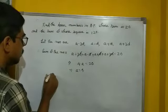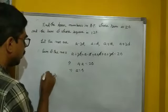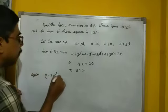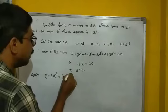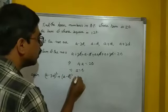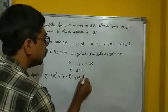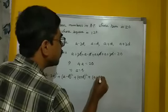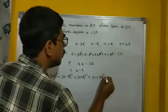It is A minus 3D square, plus A minus D square, plus A plus D square, plus A plus 3D whole square equal to 120.